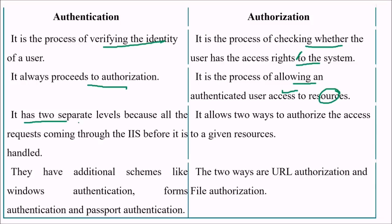Authentication has two separate levels because all requests come through IIS before being handled. In authorization, it allows two ways to authorize access to a given resource. In authentication, there are additional schemes like Windows authentication, form authentication, and passport authentication, while in authorization you can have URL authorization or file authorization.